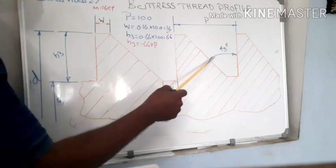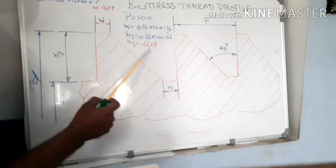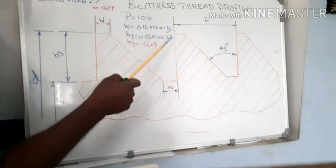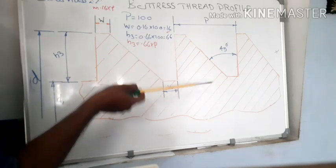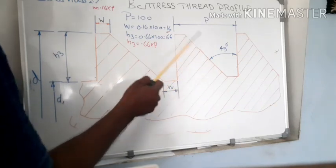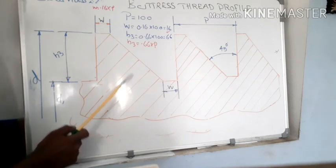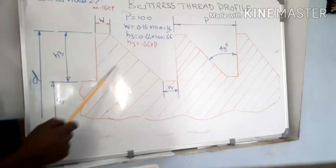Now we have to fix your angle. Thread angle is given - that is 45 degrees. We have already learned how to draw these lines in the previous classes. By using that method, you have to complete this thread profile.